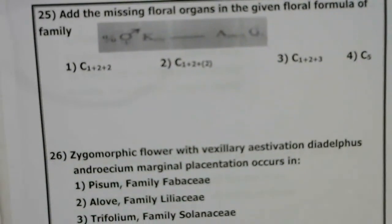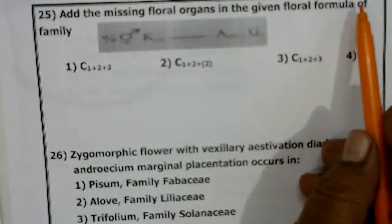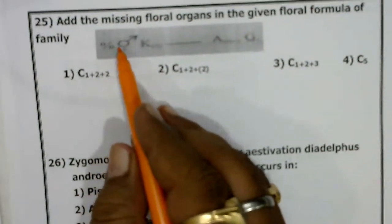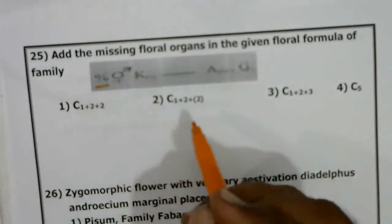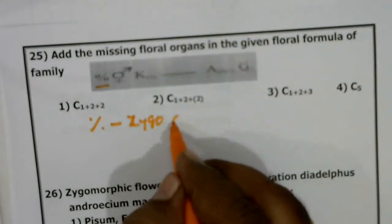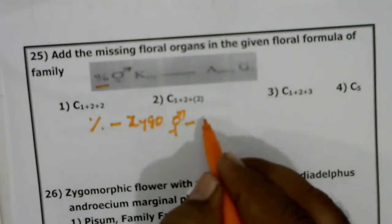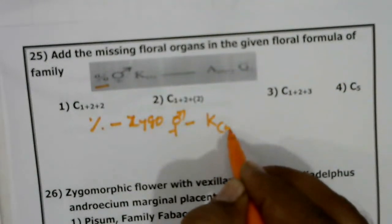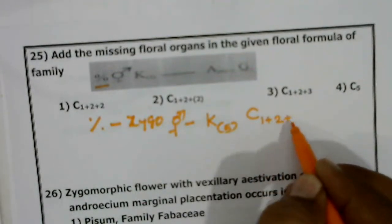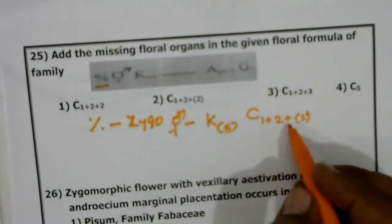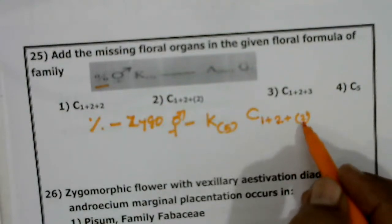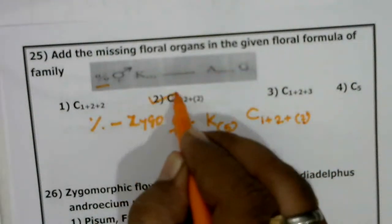Add the missing floral organs in the given formula of the family. In Fabaceae: the flower is zygomorphic and bisexual. The calyx consists of five fused sepals. The corolla has five petals arranged in 1+2+2 manner — standard, wings, and keels. The keels are fused. This is the correct floral formula for Fabaceae.